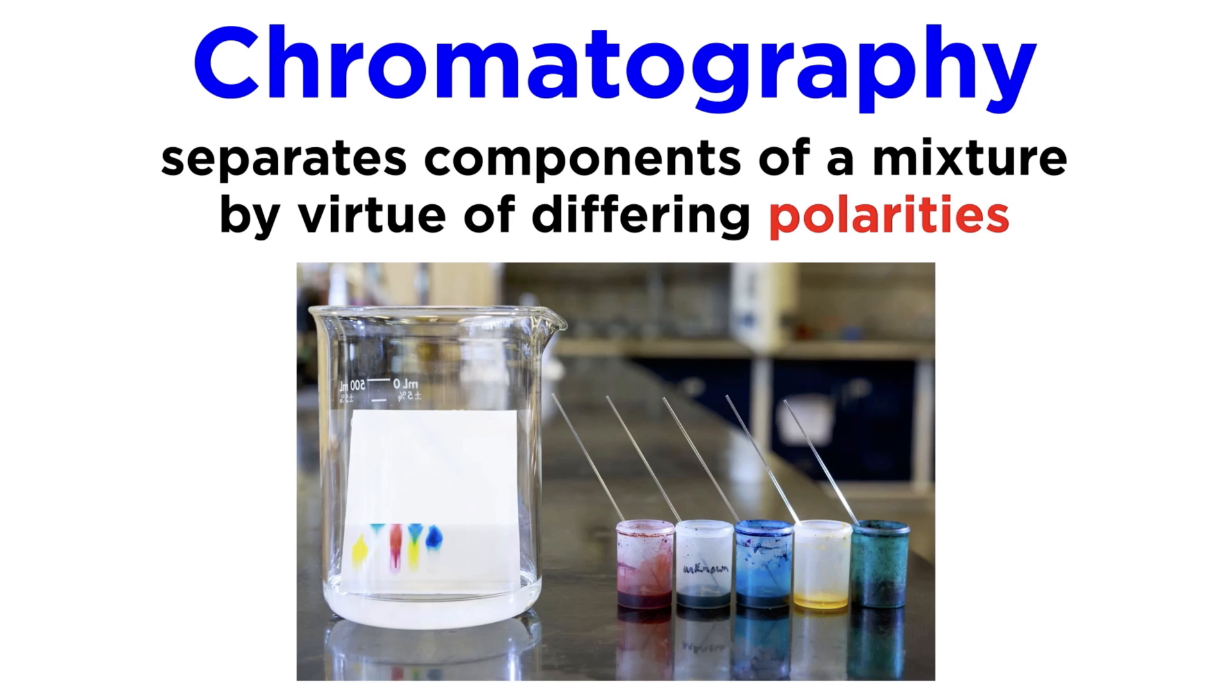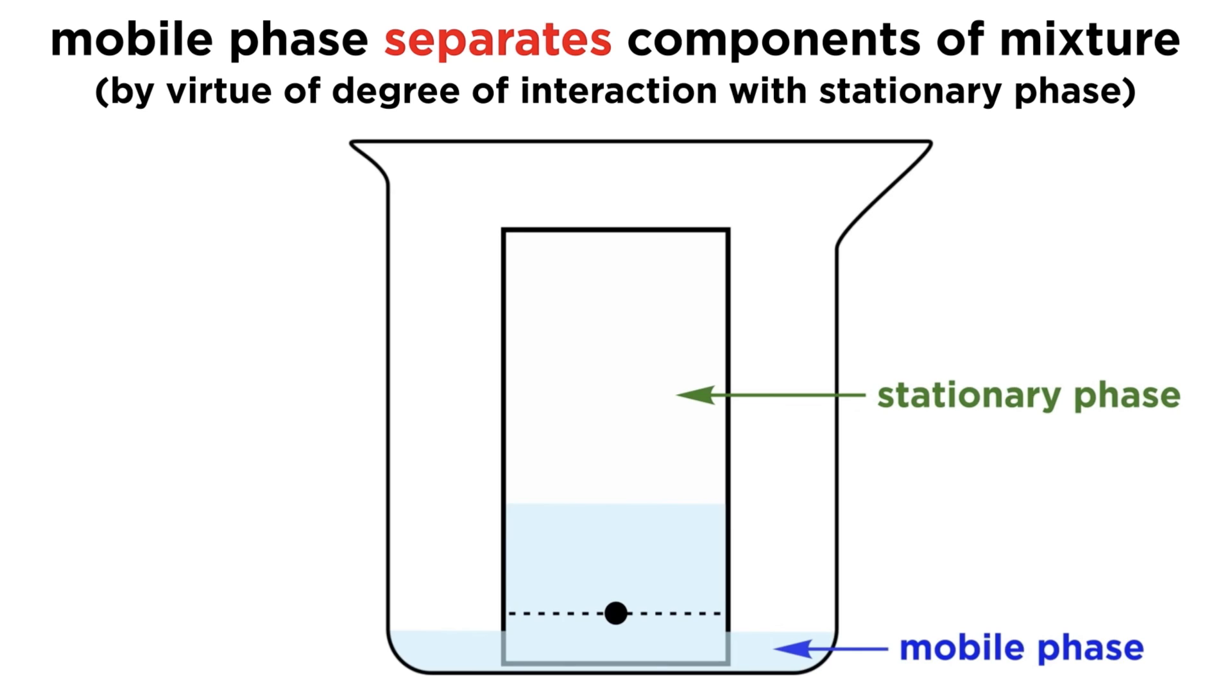We've already examined chromatography as an efficient process for separating components of a mixture on the basis of differing polarity. This occurs due to different degrees of interaction with the stationary phase, as components are pushed along with a mobile phase.